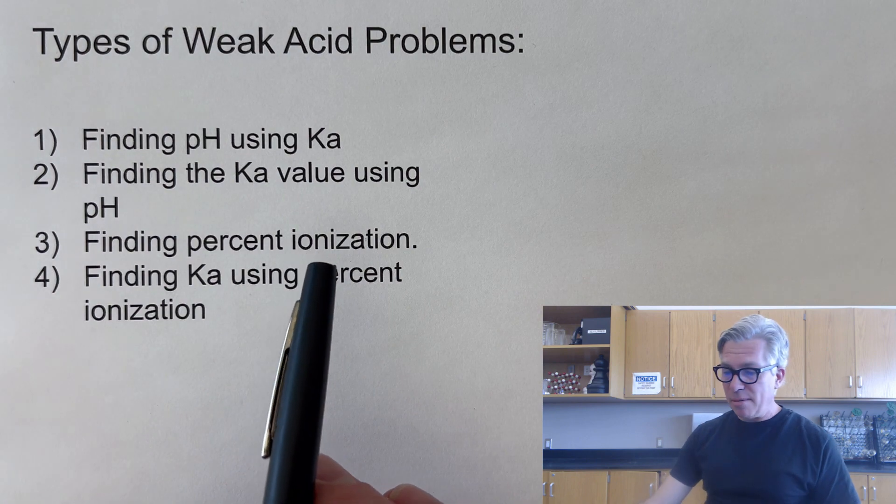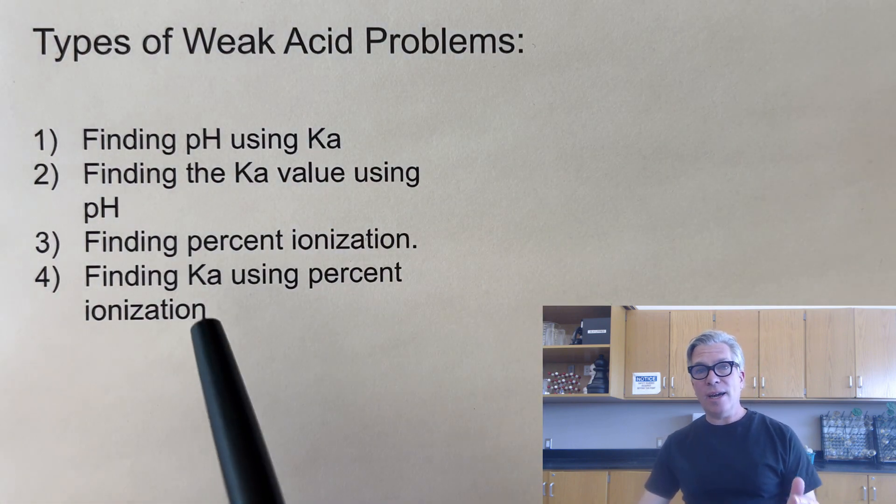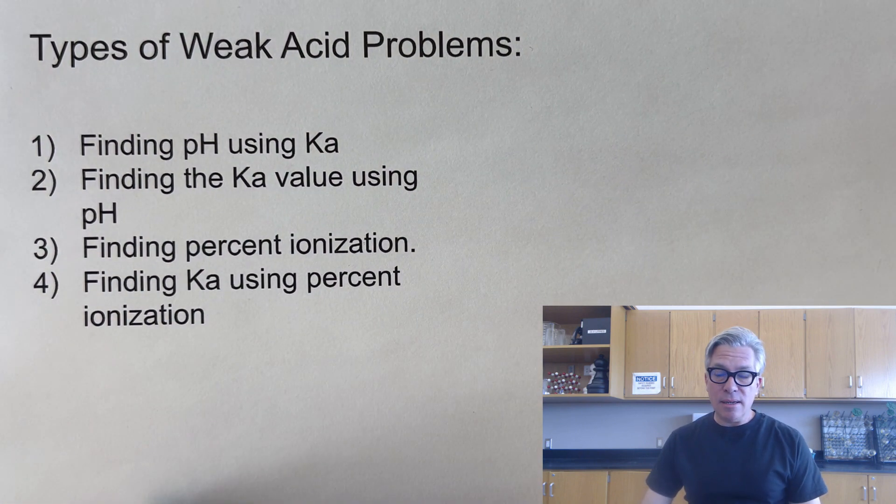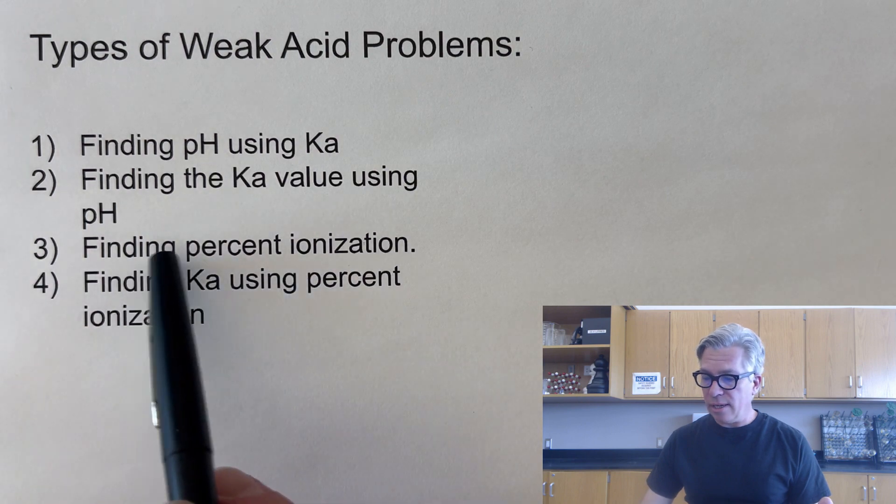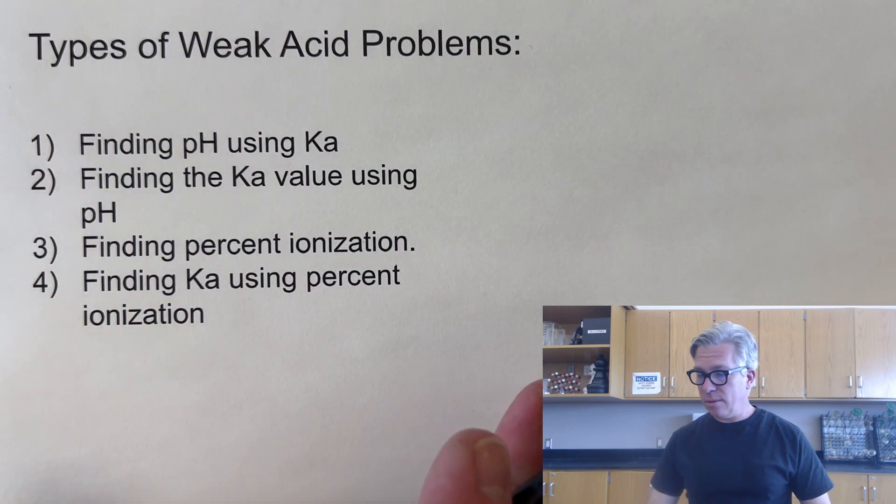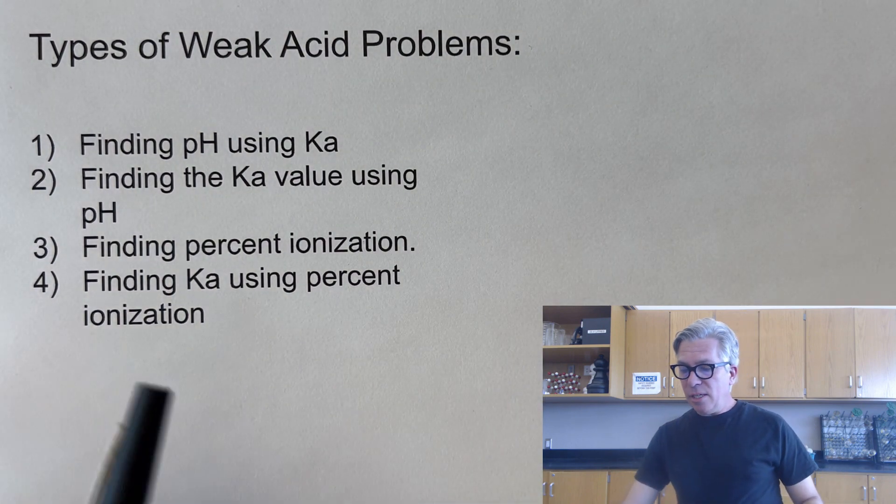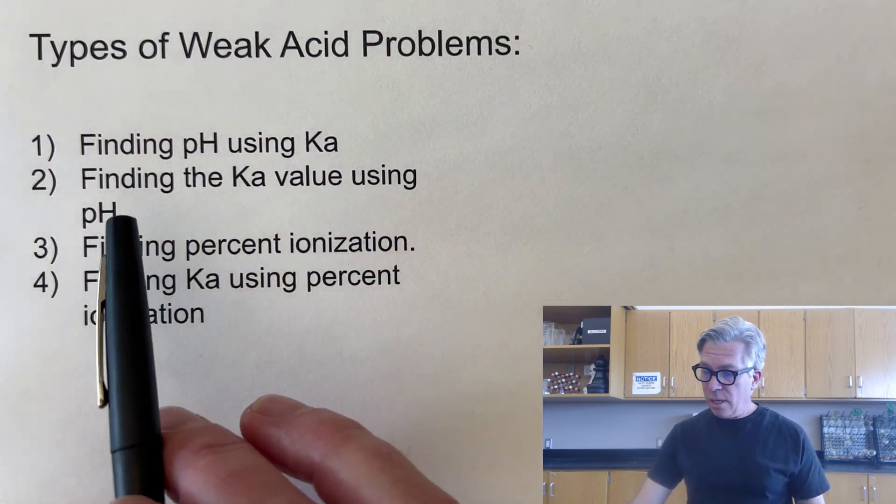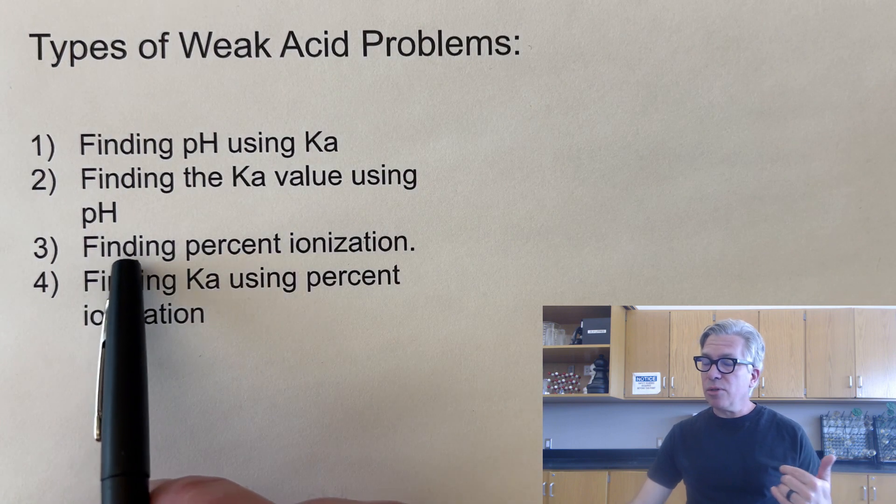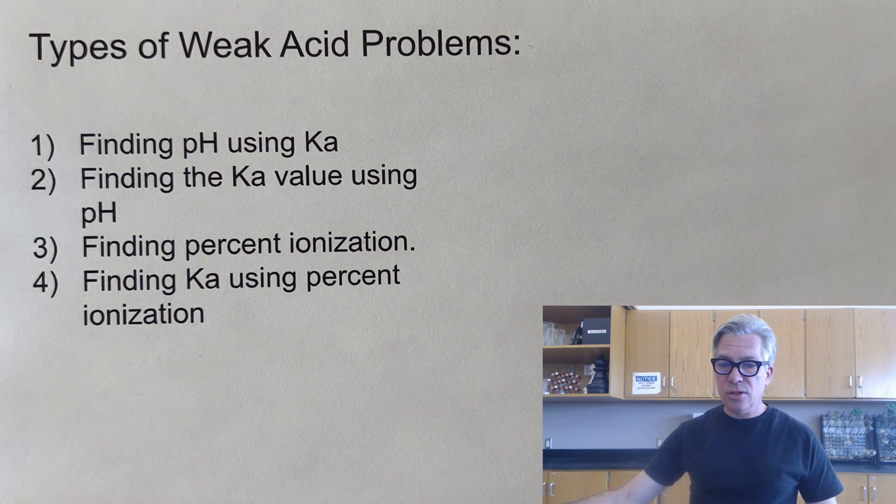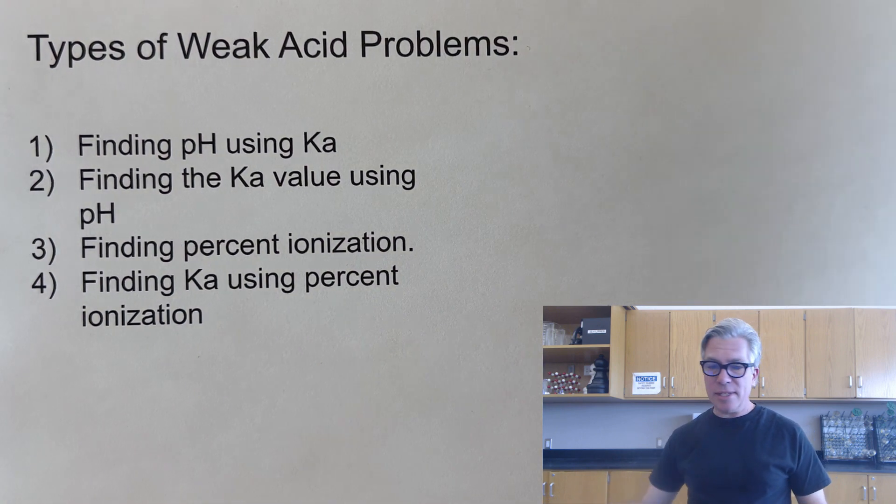In this video, I'm going to try to be ambitious and do four different types of weak acid equilibrium problems because these are the four main types that you're likely to see. And so if you know you're looking for one in particular, like for example finding percent ionization, you can skip ahead or just watch the whole video if you want. So we're going to do finding the pH using the Ka, we're going to find the Ka value using the pH which is kind of the reverse, and then we're going to learn about something called percent ionization and also finding the Ka using percent ionization. So let's get into it.